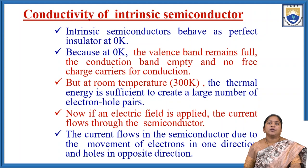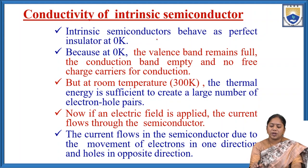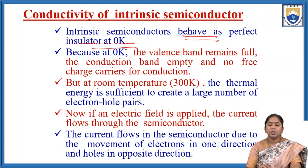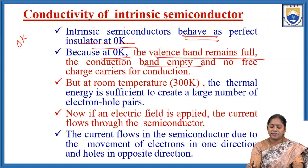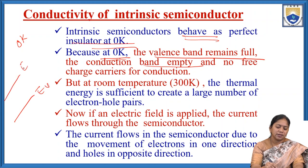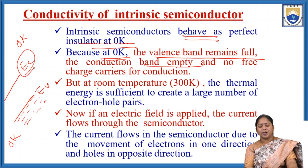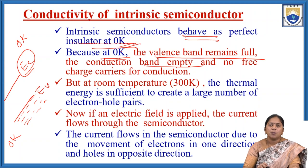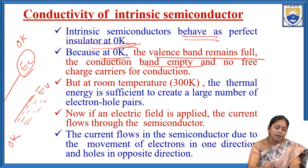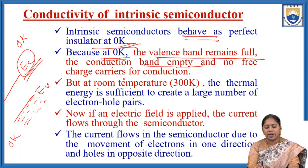Conductivity of intrinsic semiconductors: an intrinsic semiconductor behaves as a perfect insulator at 0 Kelvin, because the valence band remains completely filled and the conduction band is empty — there are no free charge carriers to conduct current. At room temperature 300 Kelvin, the thermal energy is sufficient to create a large number of electron-hole pairs.